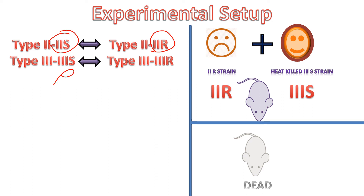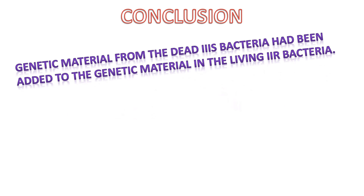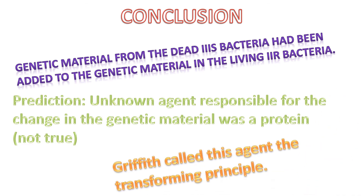Griffith concluded that some 2R bacteria had been transformed into the smooth virulent 3S form through interaction with the dead heat-killed 3S strain. He concluded that genetic material from the dead 3S bacteria had been added to the genetic material of the living 2R bacteria. He predicted that some unknown agent was responsible for this change, which he called the transforming principle. He incorrectly assumed this agent was a protein.